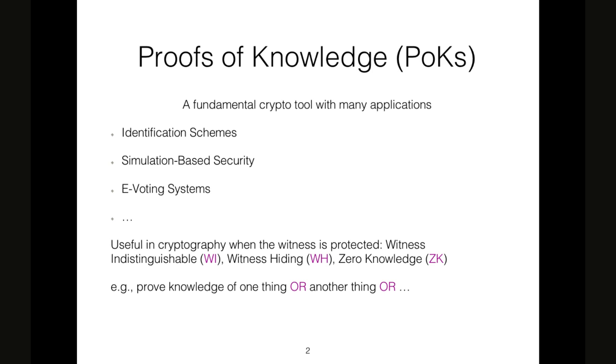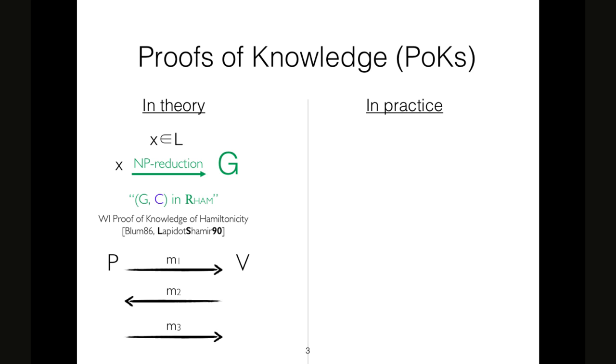Proof of knowledge is a fundamental crypto tool with many applications. In particular in cryptography it is useful when there is a witness that needs to be protected. When WI is needed is an example of that. We have a prover that wants to prove the knowledge of a secret X or a secret Y or a secret Z. To implement proof of knowledge, we can use basically two approaches: a theoretical approach and a more practical and efficient approach.